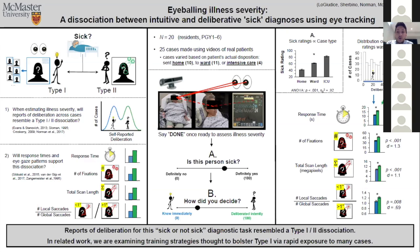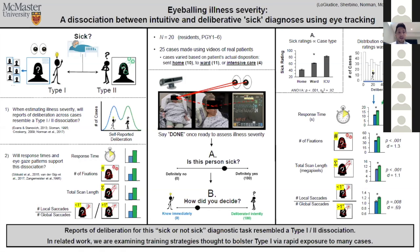Clinicians are often forced to make rapid decisions about how sick or ill a patient is — basically, is this patient sick enough to warrant admitting them to the ward, or are they not sick, in which case they can be discharged home safely? Informally, this is referred to as eyeballing the illness severity of the patient. This is a really important skill, especially in emergency medicine situations, but we don't really know a whole lot about how it works or how it can best be trained.